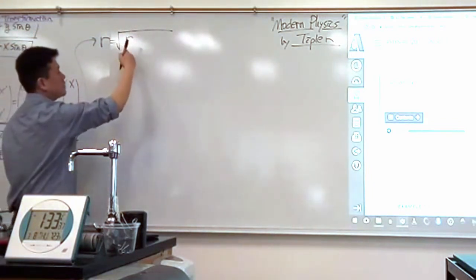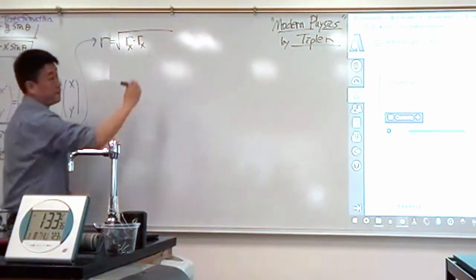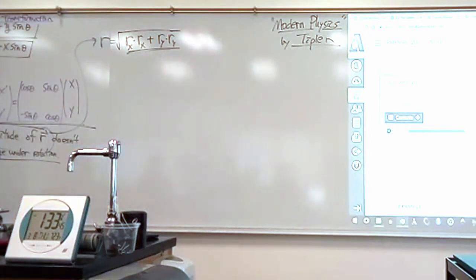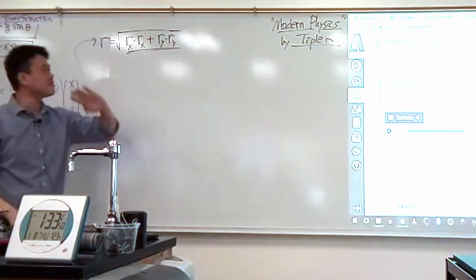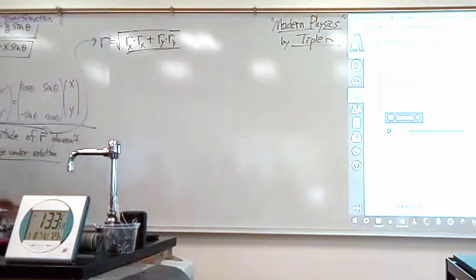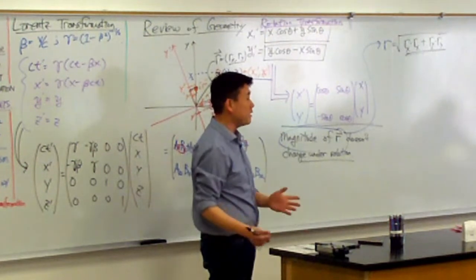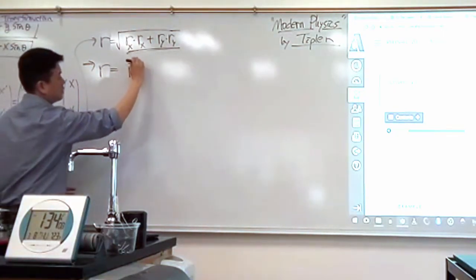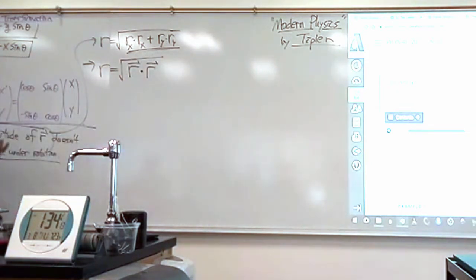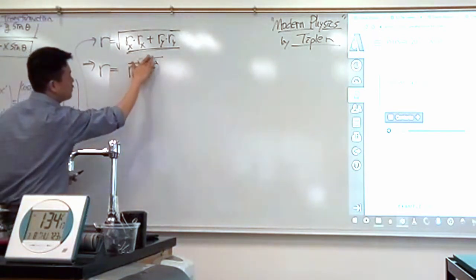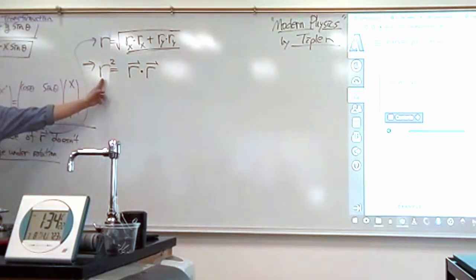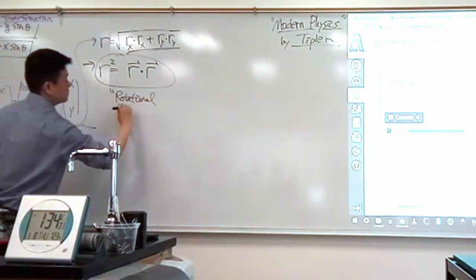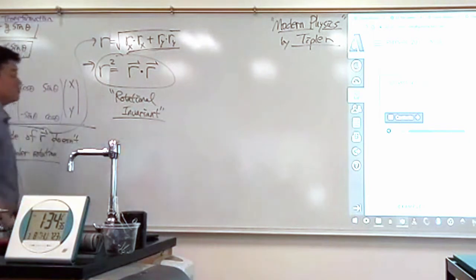Instead of writing it as a component squared, I'm going to write it as the component multiplied by itself: rx times rx, plus ry times ry. Writing it this way still refers to components — you need the axis to write those down. In physics, we like to write expressions in an axis-independent way. I can say the magnitude is the vector dotted with itself, square-rooted. To simplify, if r doesn't change, then r squared also doesn't change. So this is what you might call a rotational invariant — a quantity that doesn't change when you perform a rotation.